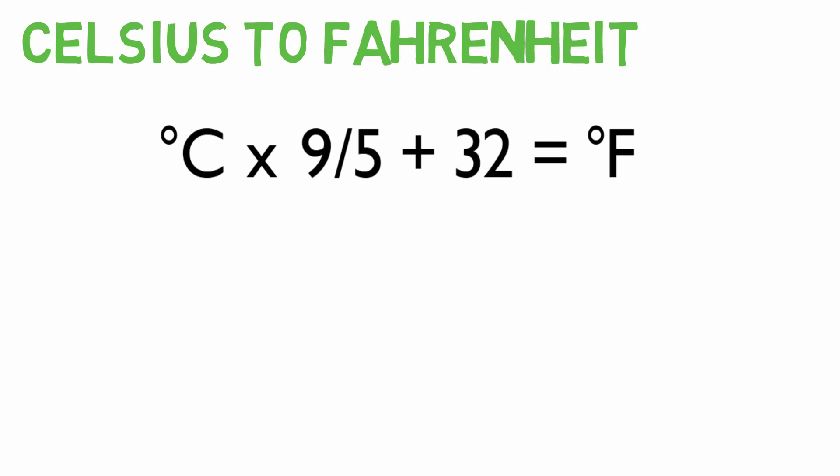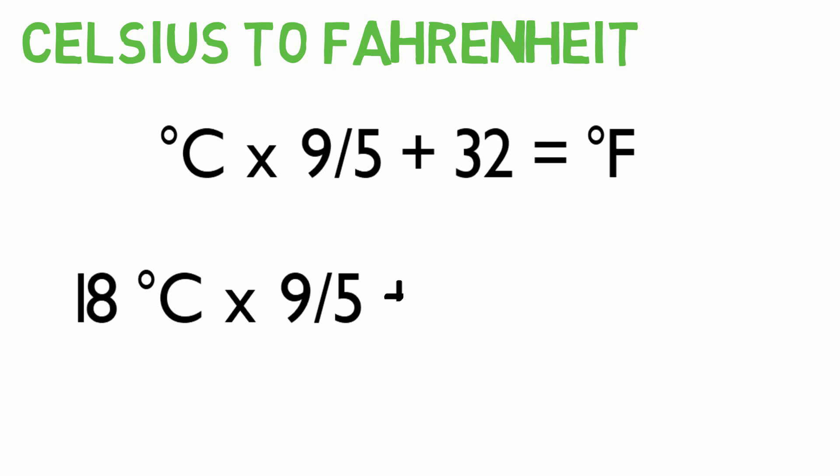Converting between Celsius and Fahrenheit is a little trickier, because the degrees are not equivalent. To convert 18 degrees Celsius into Fahrenheit, first multiply 18 by 9 fifths, then add 32, which gives you 64.4 degrees Fahrenheit.